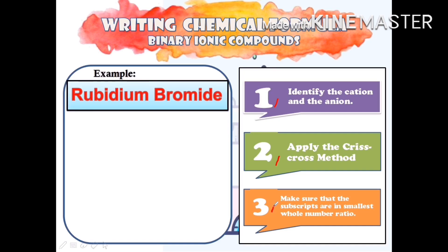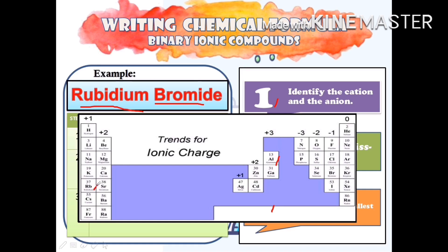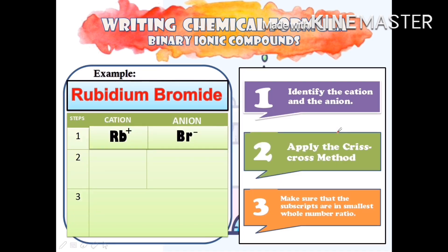In step 1, we need to identify the cation and the anion. Since this is an ionic compound, the cation is named first before the anion. So rubidium is our cation, and bromide — that is bromine — is our anion. Rubidium has a chemical symbol of Rb and a 1+ charge. The chemical symbol of bromine is Br and it has a 1− charge. That is Rb⁺ and Br⁻. We're done with step 1.